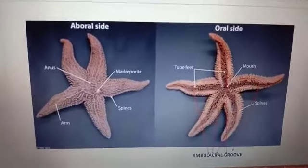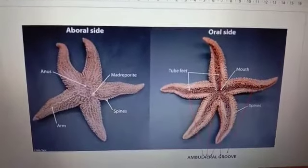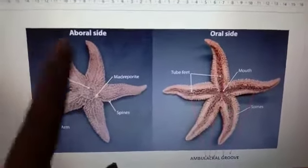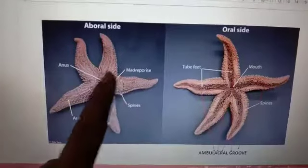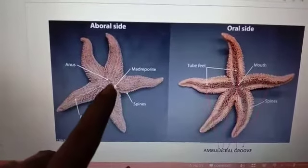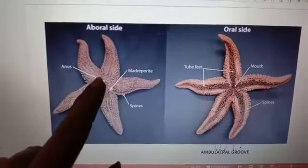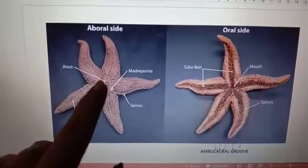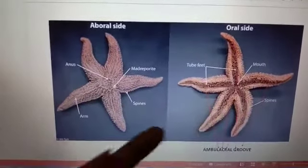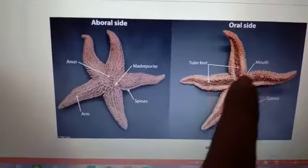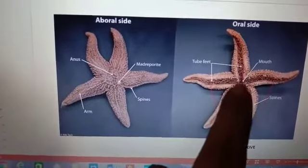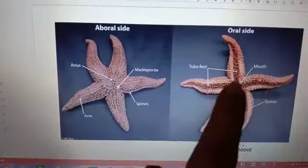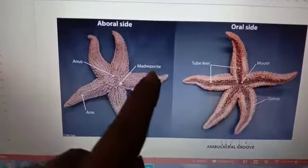On the oral side and aboral side, you can see five arms. On the aboral side you can find the madreporite mark. The anus is at the center of the central disc. On the oral side you can see the mouth and five arms with five ambulacral grooves.